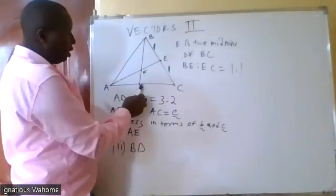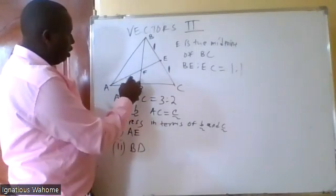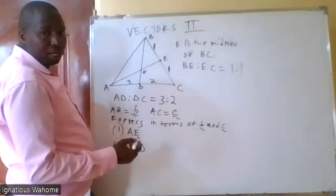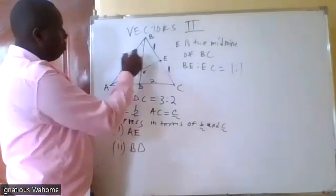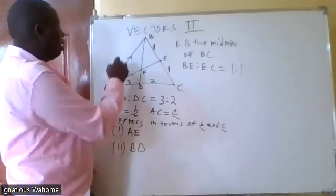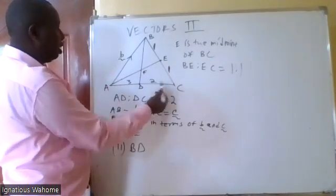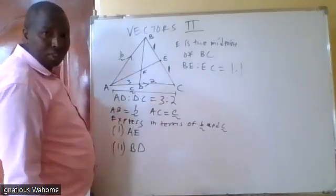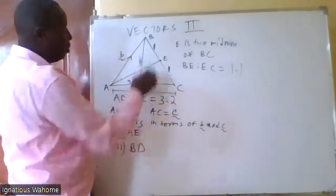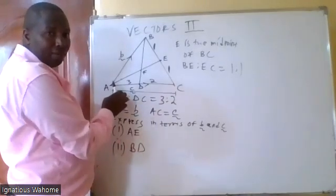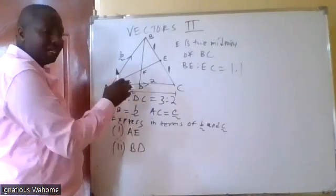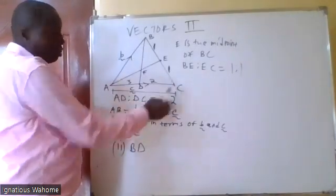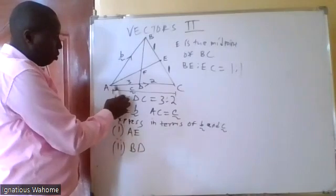You are also given that AD to DC has a ratio of 3 to 2. Then AB is vector b — from A to B, the direction is vector b. And AC, the whole of this one, is vector c. So A is the starting point, the origin starts from here. AB then A to C — so these are the vectors. F is a point of intersection of lines BD and AE.